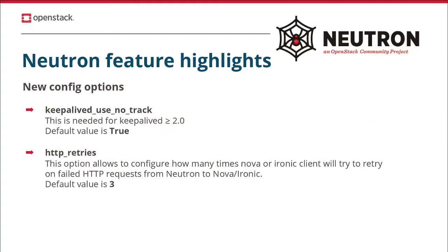We also added a couple of new config options that may be important from an operator's point of view. The first is `keepalived_use_no_conntrack`. This is important if you are using Keepalived older than version 2.0, because older versions don't know about the no-conntrack option and will complain if Neutron adds it to the Keepalived config file. The default value is true because newer distributions like Ubuntu 20.04 or Fedora 8 already ship Keepalived 2.0. But if you are using an older distro or an older Keepalived, you may need to set this value to false.